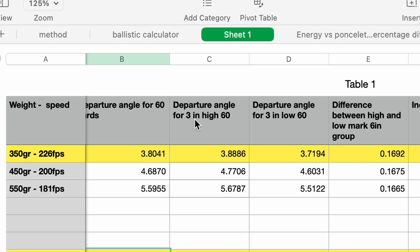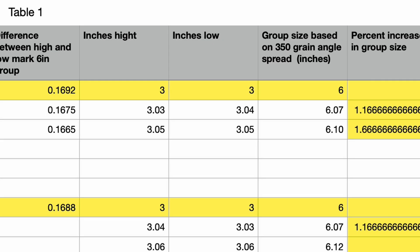For that 350-grain arrow at 226 feet per second, it has a degree spread of 0.1692 degrees to produce a six-inch group at 60 yards. What does the group look like if we step up to 100 grains more — so 450 grains? On the same bow, we reduce velocity based on kinetic energy remaining constant, so velocity comes down to 200 feet per second. Using our initial variance for the light arrow, the group size grows to 6.07 inches — just 0.07 inches of difference between a 350-grain and a 450-grain arrow.